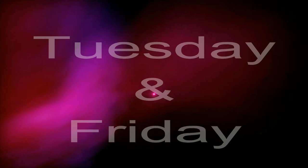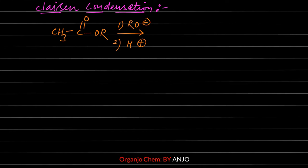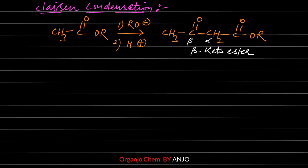In this video lecture, we will learn what the Claisen condensation reaction is and its mechanism. We will also learn which other reactions are technically similar to Claisen condensation. Claisen condensation is a two-step reaction. In the first step, the ester reacts with a strong base. In the second step, acidification of the product gives beta-keto ester as the final major product. This reaction uses two molecules of an ester.